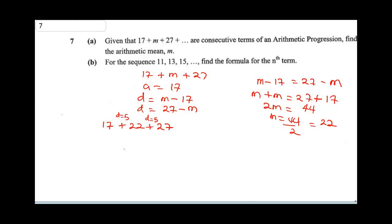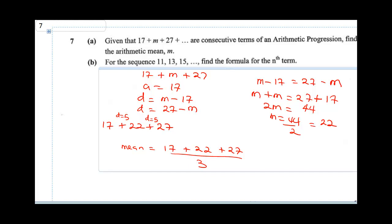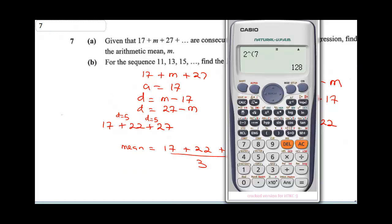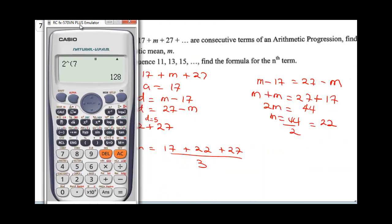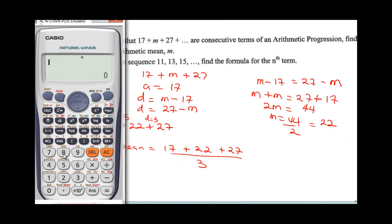Now it says find the arithmetic mean. The mean is going to be 17 plus 22 plus 27 divided by 3. So for us to get this, we're going to punch this on our calculator. This is going to be 17 plus 22 plus 27. This will give me 66.